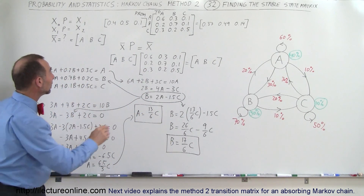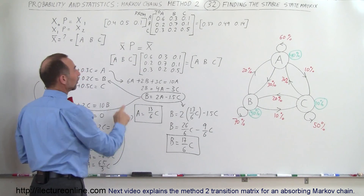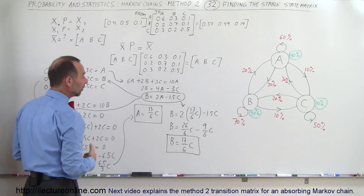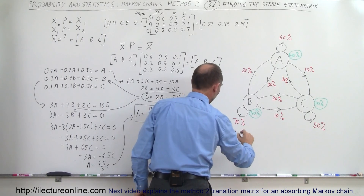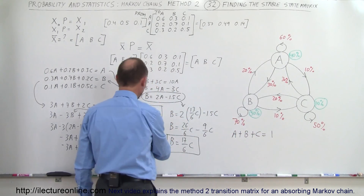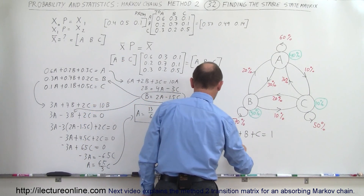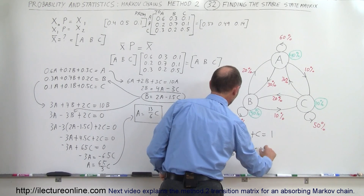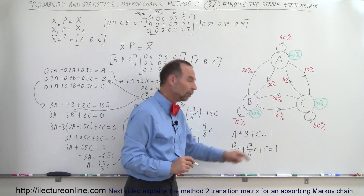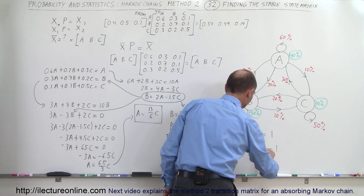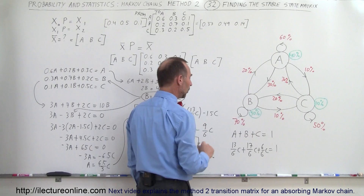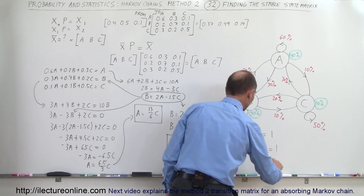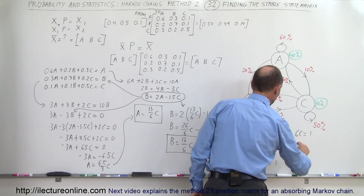Now we use the principle that the elements of the state matrix always add up to 1 — just as 50% + 40% + 10% = 100%. So A + B + C = 1. Substituting: (13/6)C + (17/6)C + (6/6)C = 1, which gives (36/6)C = 1, so 6C = 1, and therefore C = 1/6.